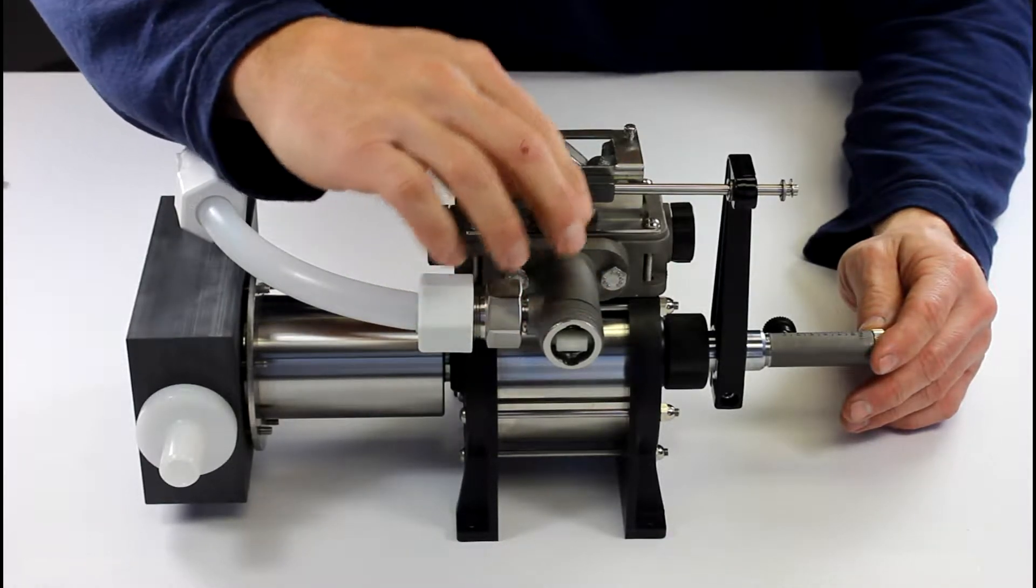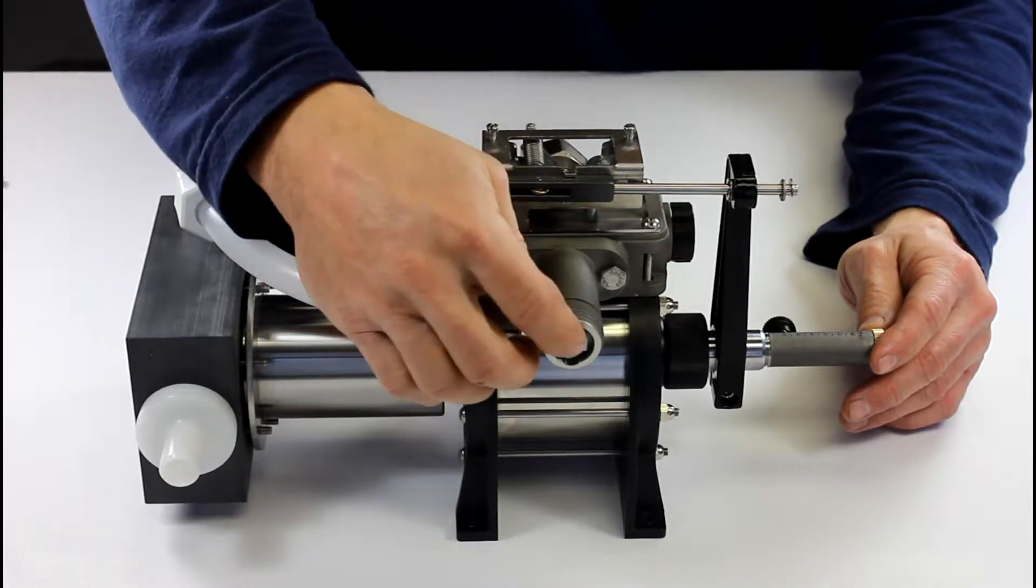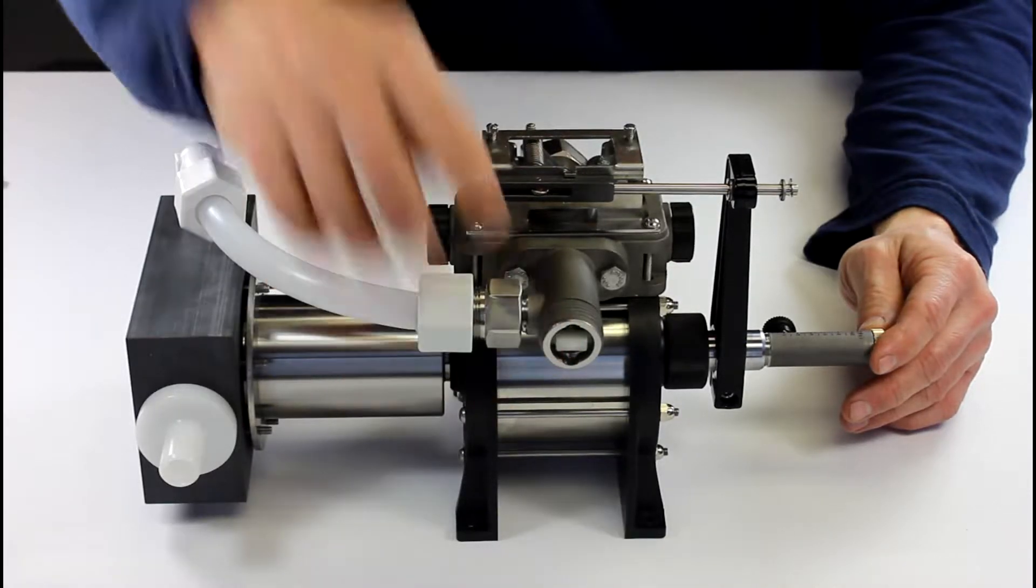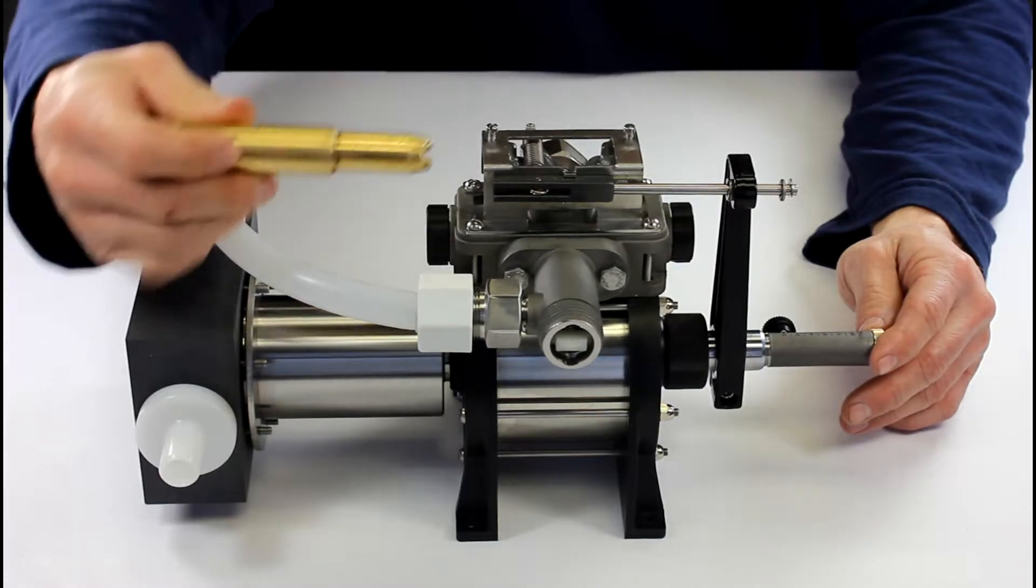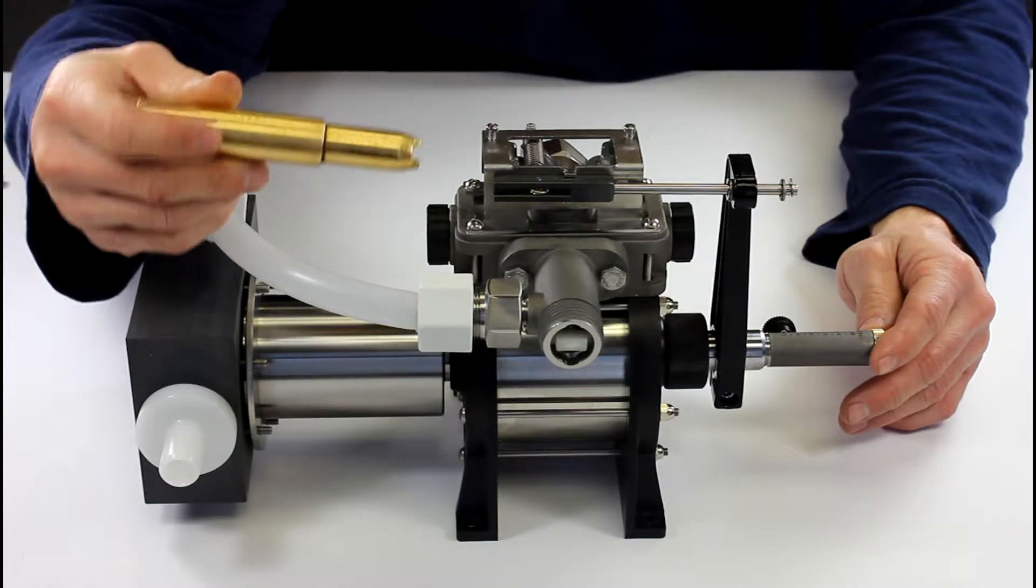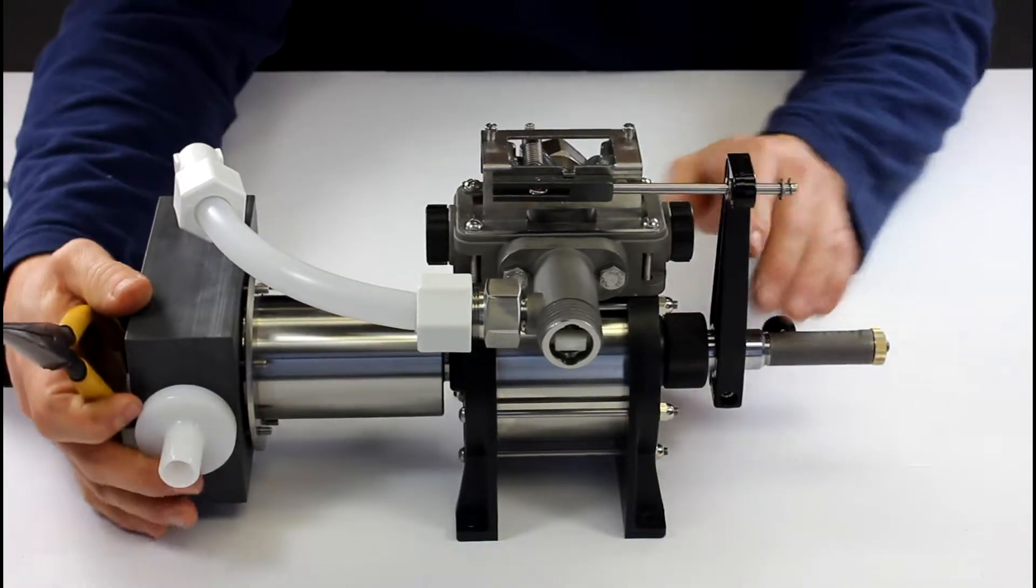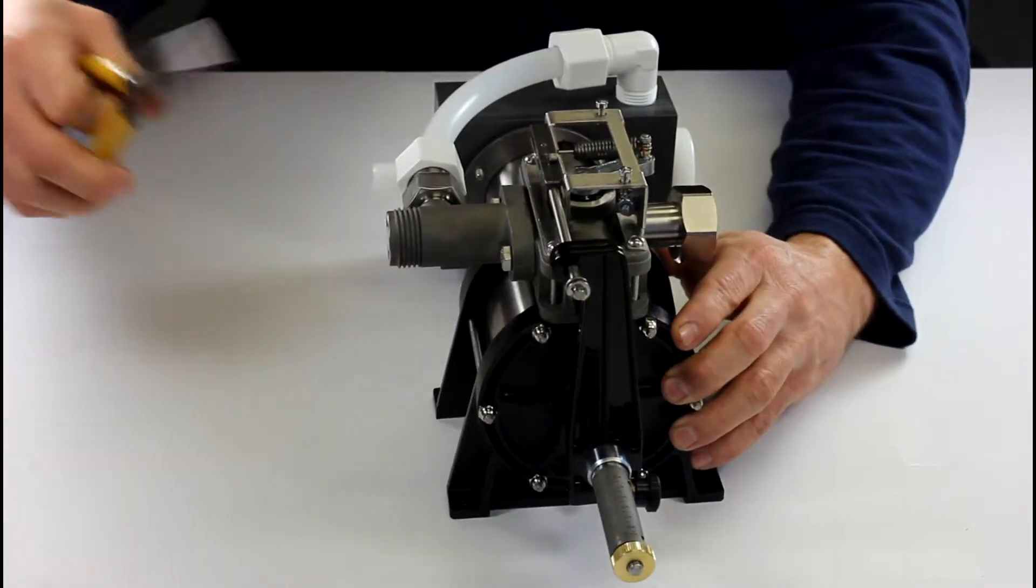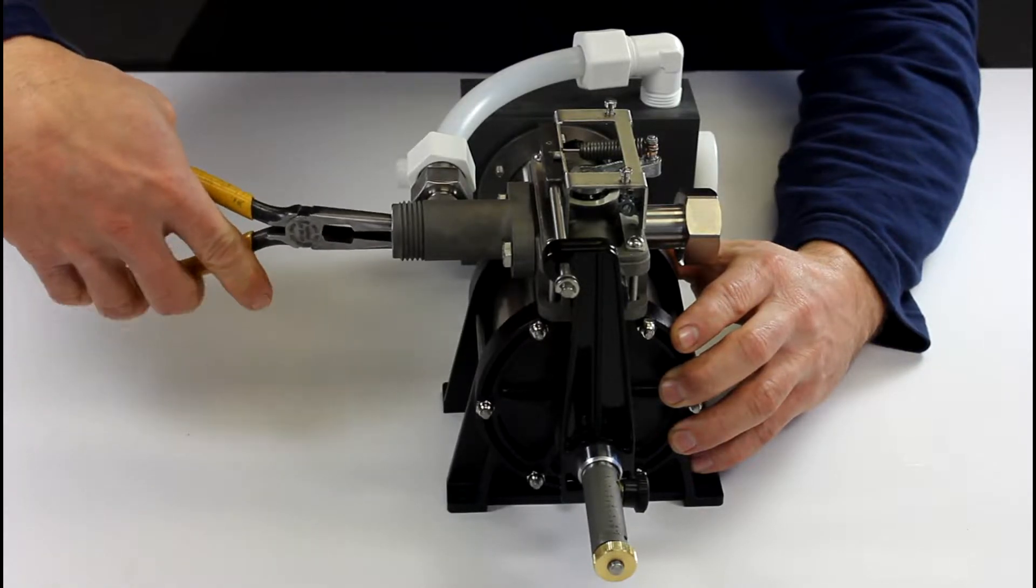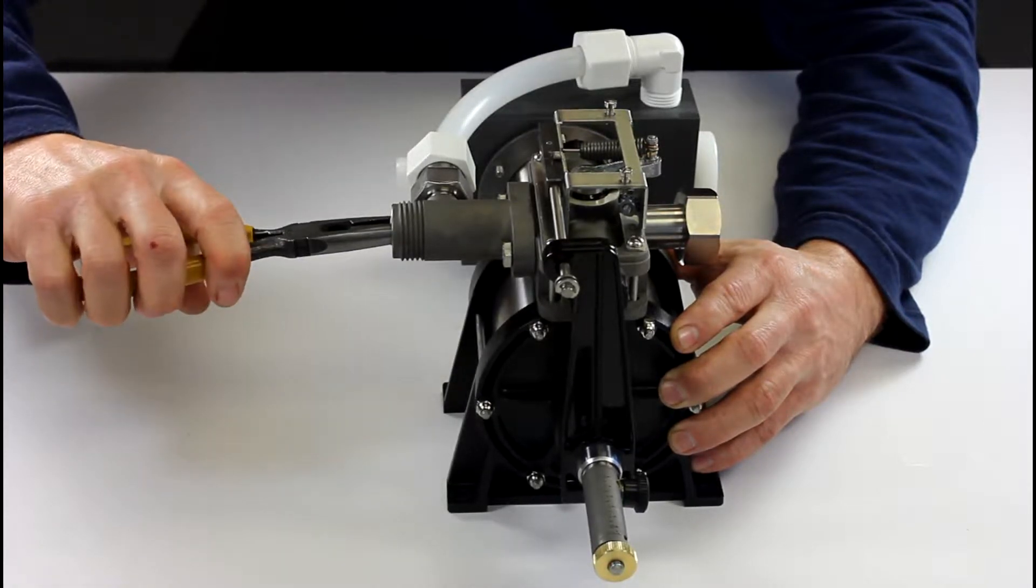To remove that you can use a needle nose pliers or you can fabricate yourself a little tool like this that we fabricated, but for out in the field the needle nose pliers works real good. So I'm just going to remove that, squeeze on it, give it a twist counterclockwise.